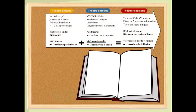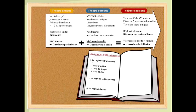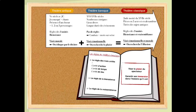Petit rappel sur les règles du théâtre classique : la règle des trois unités — un lieu, un temps, une action — la règle de la bienséance et de la vraisemblance. Bien sûr, tout ceci dans le but de garantir l'illusion que tout ce que voit le spectateur est vrai, afin de garantir un maximum son plaisir. Un plaisir qui est rendu possible, en quelque sorte, par le respect de ces règles.